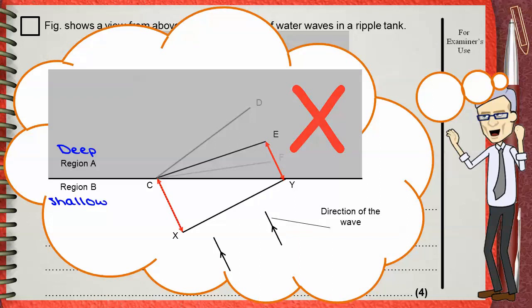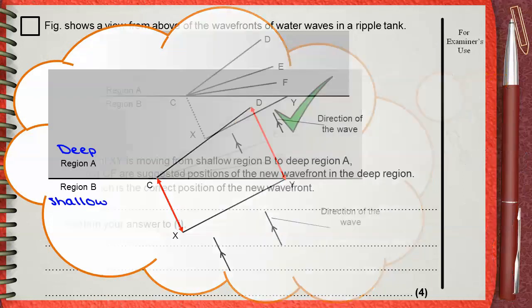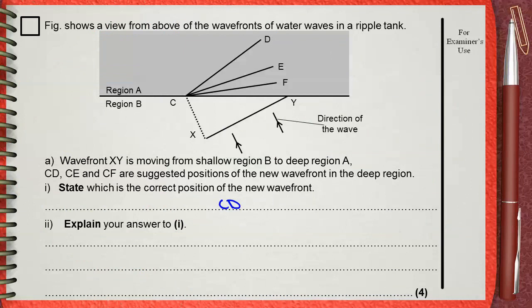Let's look at the third position, CD. I think this will be correct because Y travels a greater distance to D in the same time X travels to C. This means Y was faster than X, indicating the wavelength and wave speed in the deep region are greater than in the shallow region. This is correct — water waves in a deep region have greater wavelength and greater speed. So CD is the correct choice.